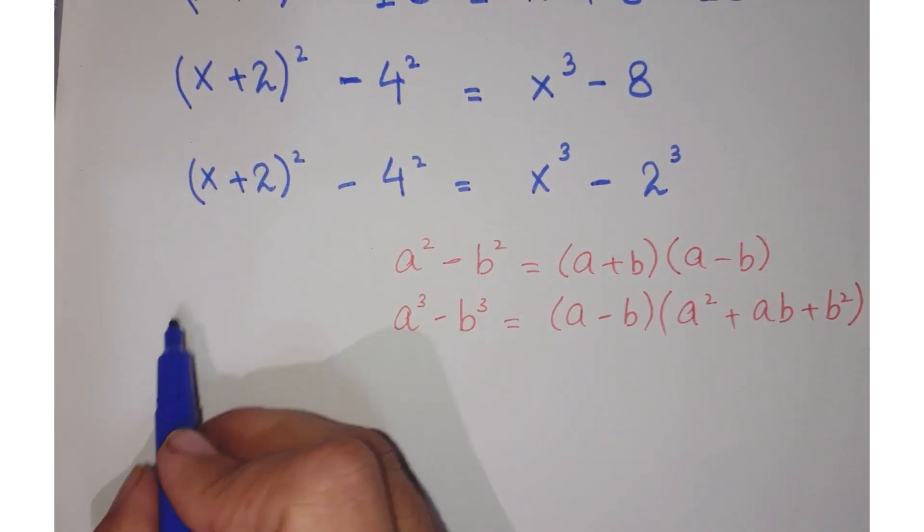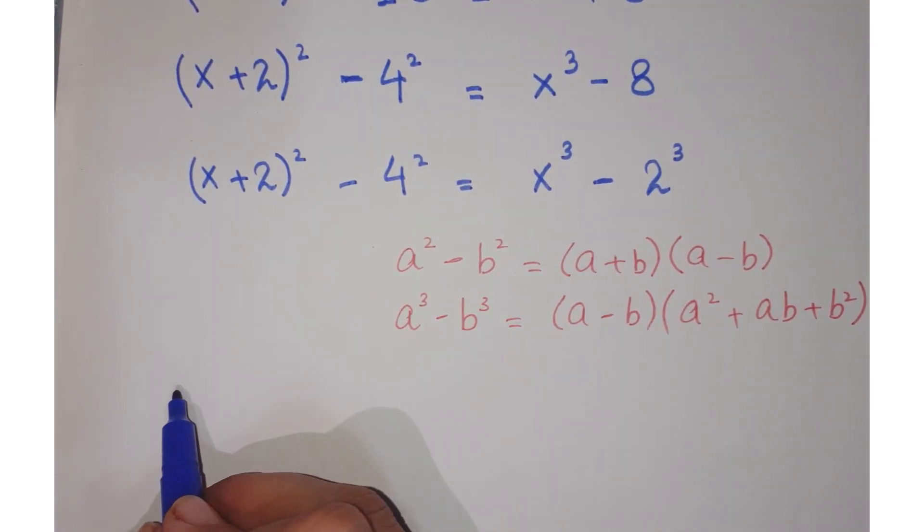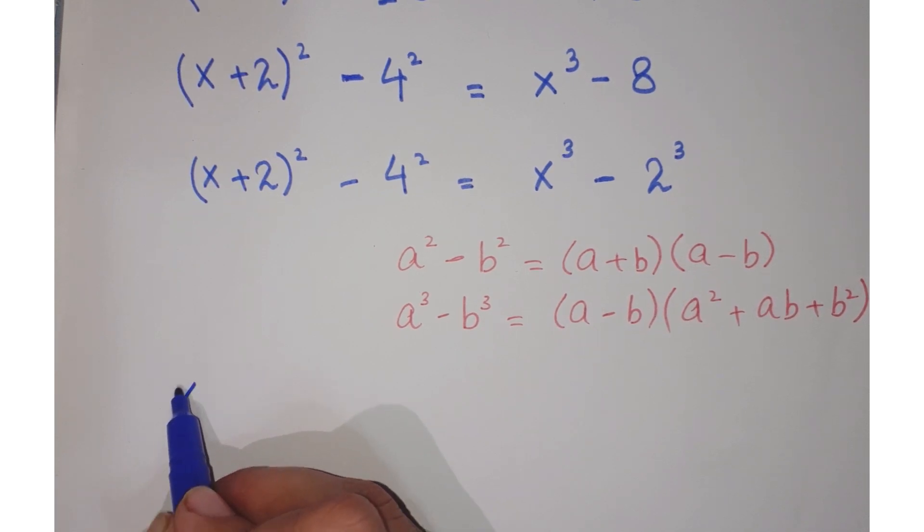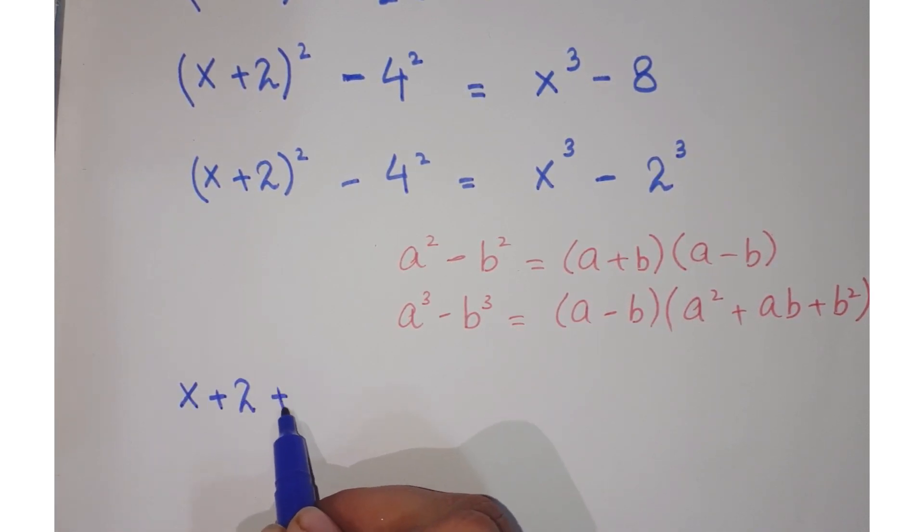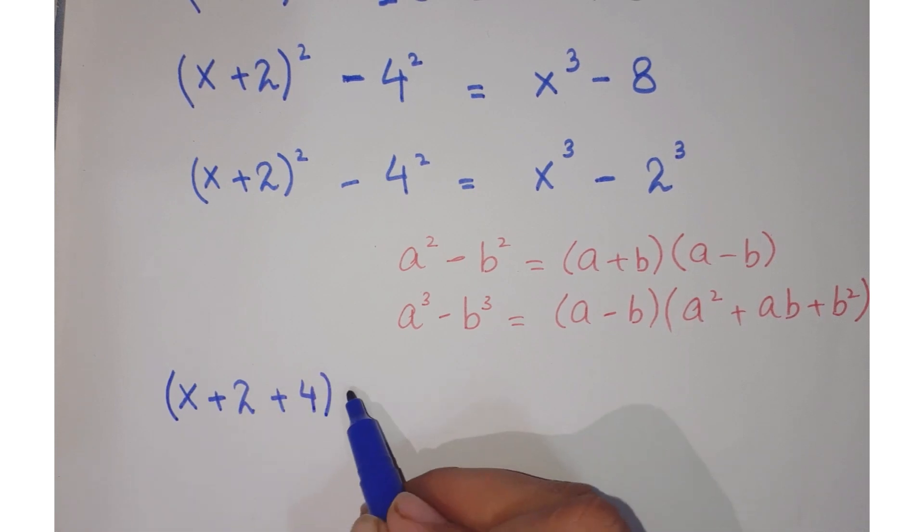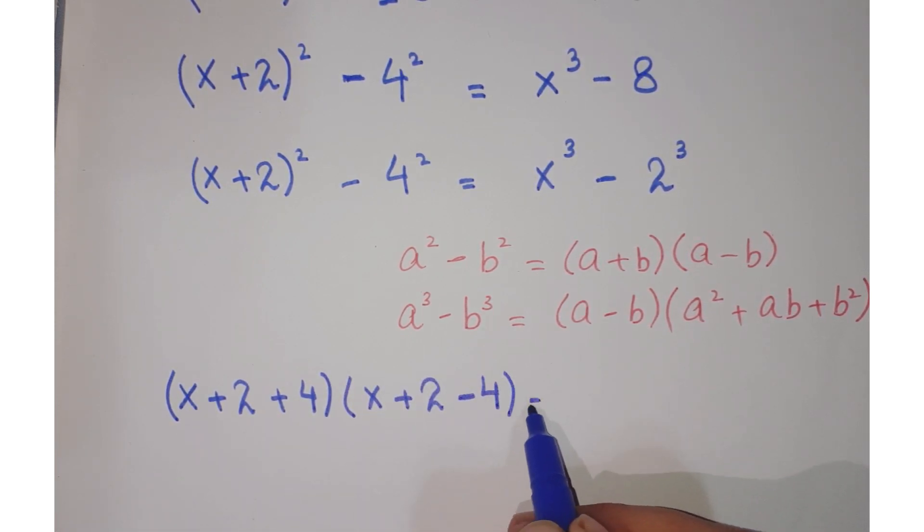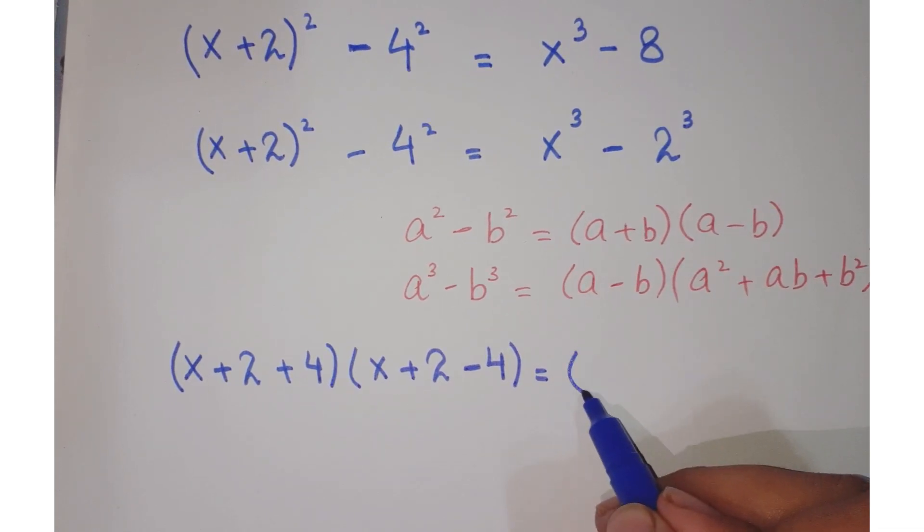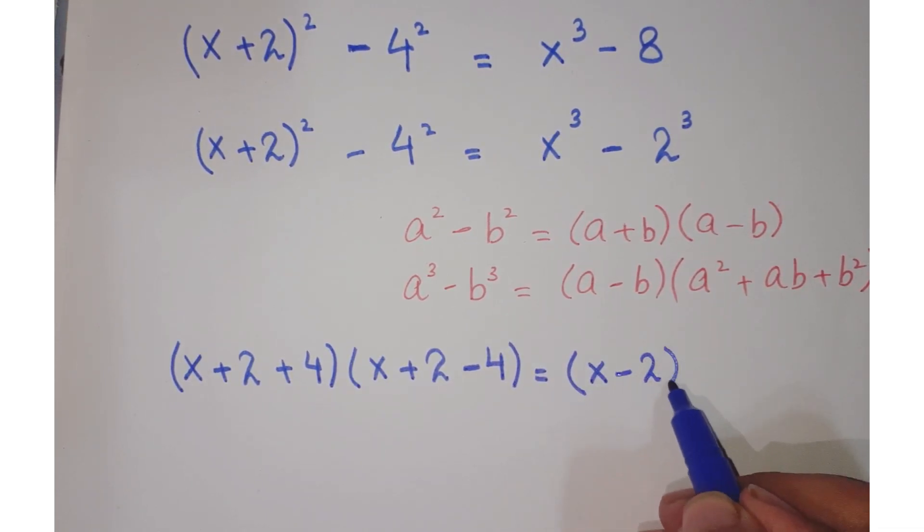Now expand it. Apply this formula on the left hand side. We have (x+2+4)(x+2-4) = (x-2)(x² + 2x + 4).